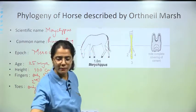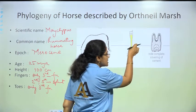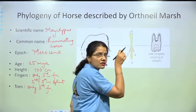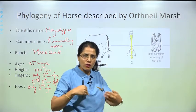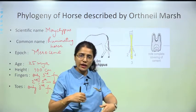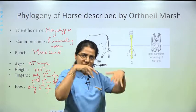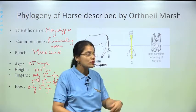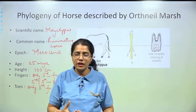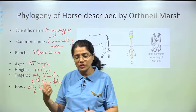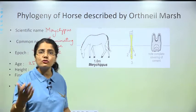What was happening gradually is that the side digits kept reducing so that the central portion — the third finger — became the main load-bearing one. It became longer and stronger in comparison to the others, able to support the full body weight. That is why the reduction in fingers and toes is so important — this feature plays a major role in the evolutionary story.